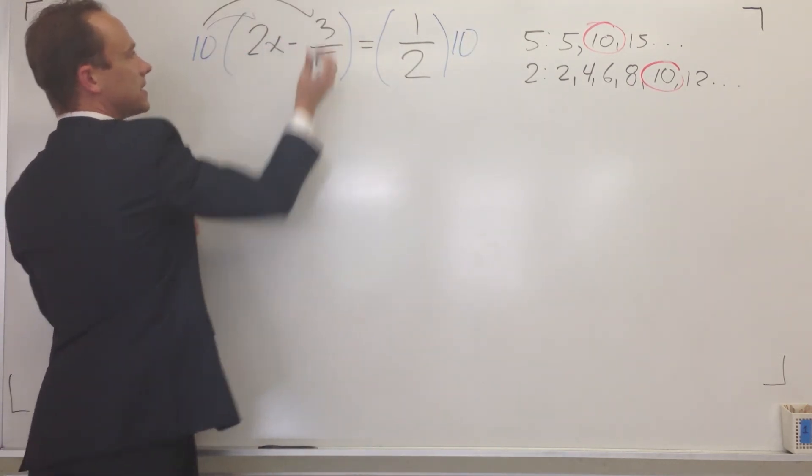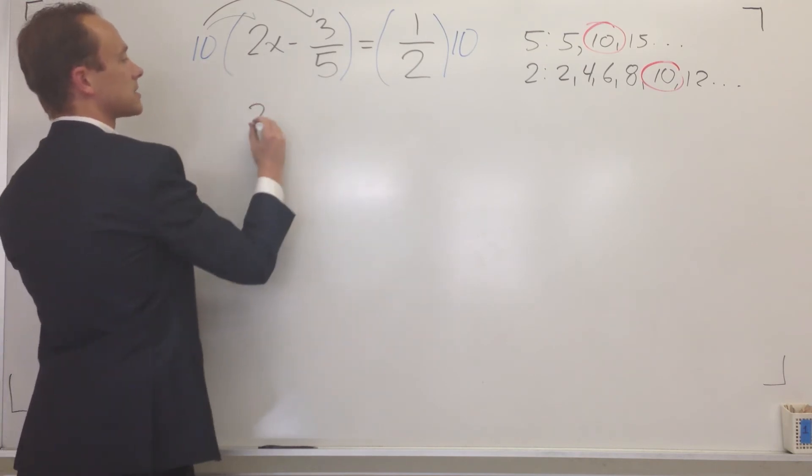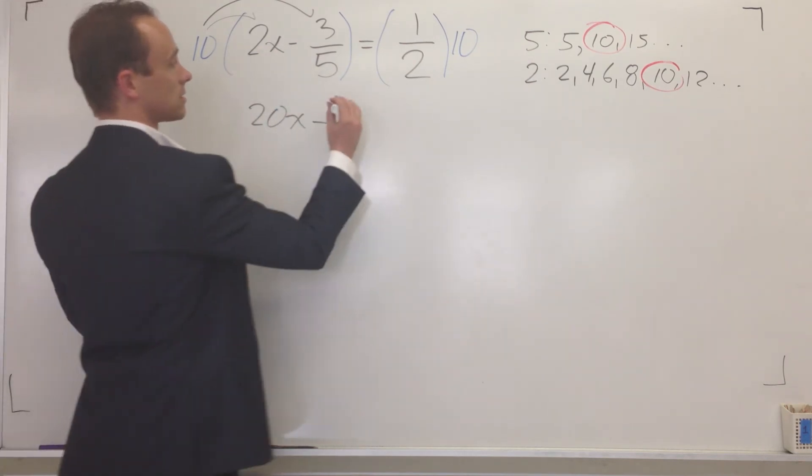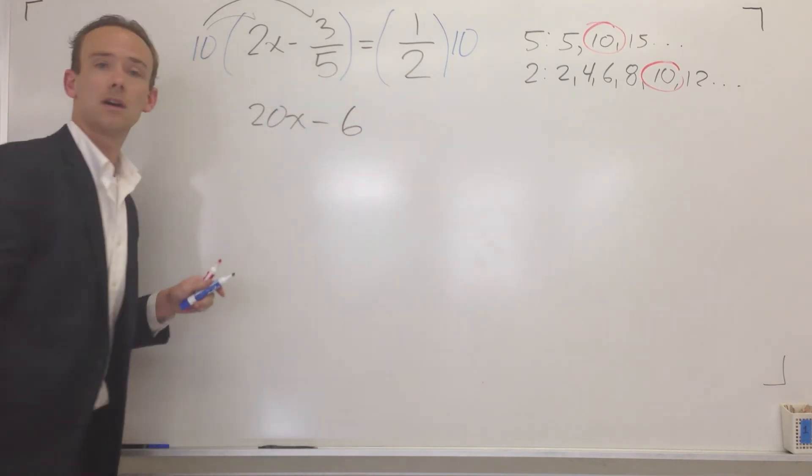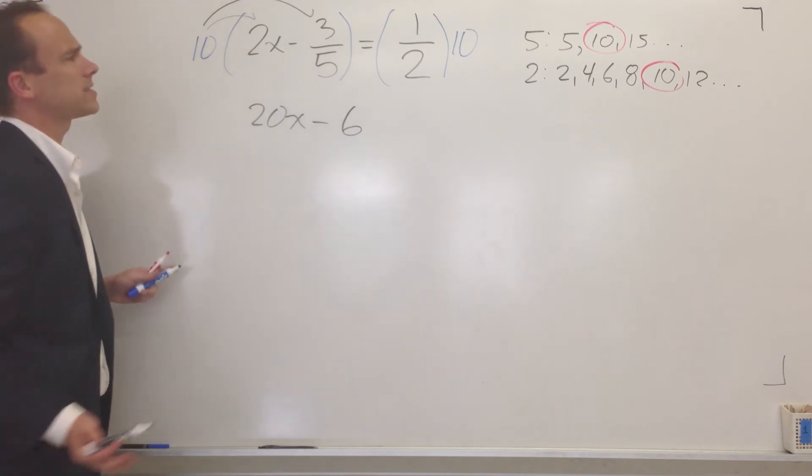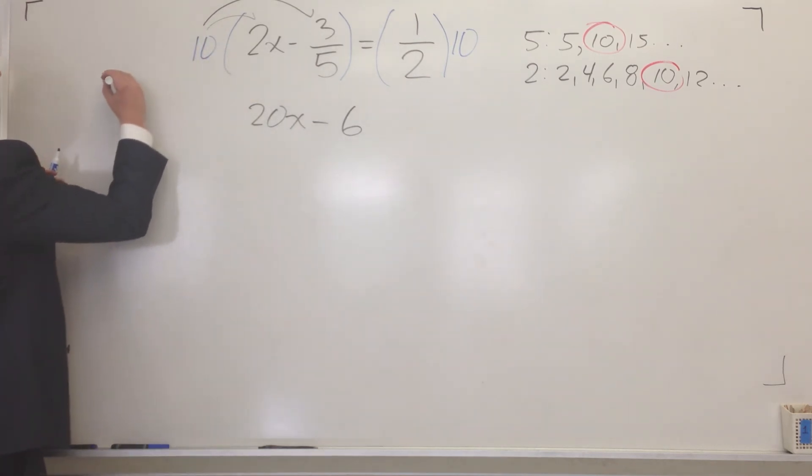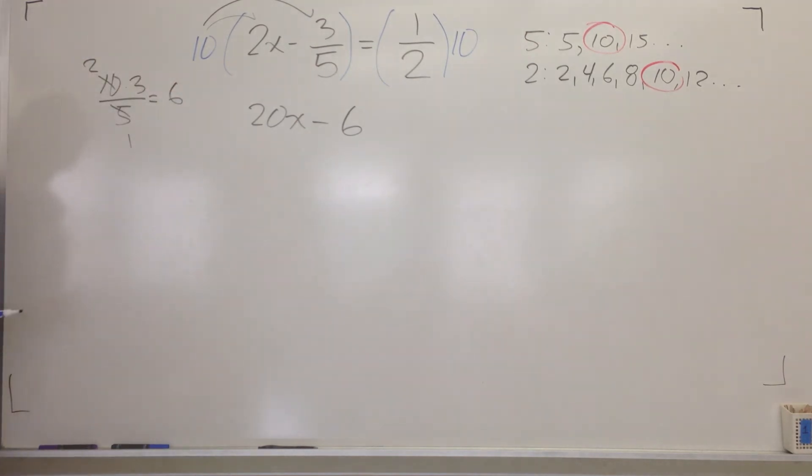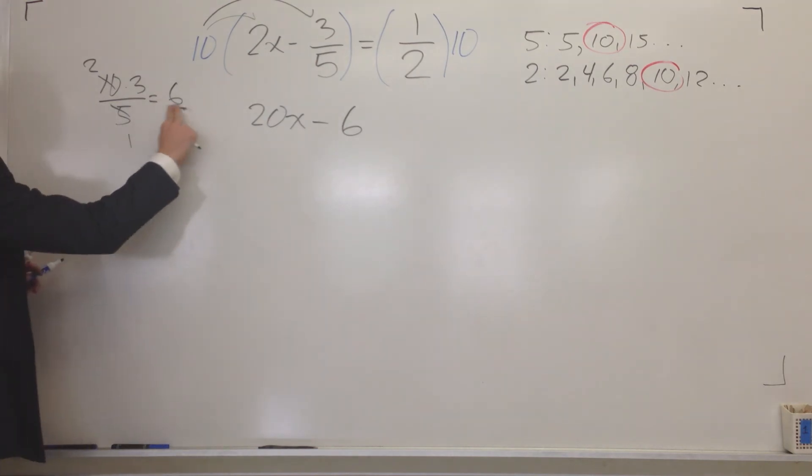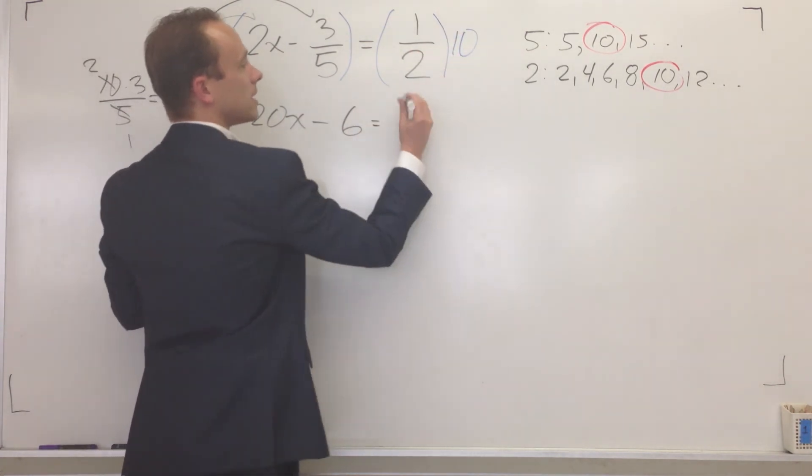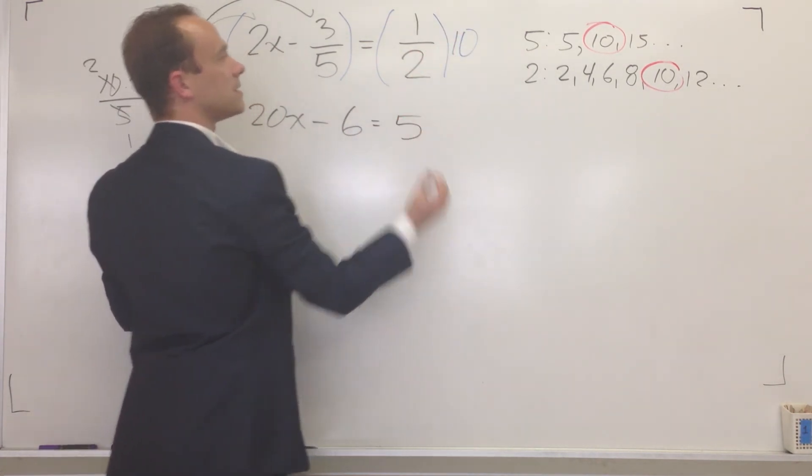All right. So now we distribute the ten. Ten times 2x gives us 20x. You see a fraction? I don't see no fraction. And you say, where's the six? I thought it was a three. Look, watch this. Ten times three over five. That becomes a one. That becomes a two. Two times three. There's a six. It's over one, but we don't have to show the one. So that gives us equals ten over two is five.